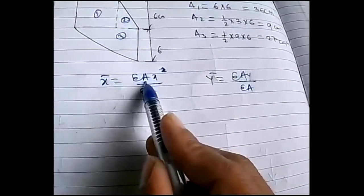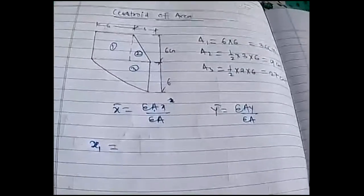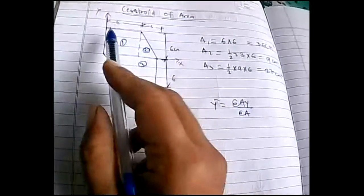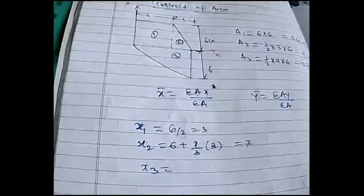After working out the areas, we need to find x1, x2, x3 and y1, y2, y3. We'll mark the reference axes — this is your y-axis and this is your x-axis. The x-centroid is the distance from the centroidal point to the reference axis. So x1 = 6/2 = 3, and x2 = 6 + one-third of base = 7.